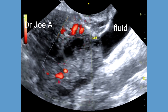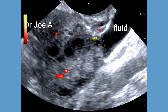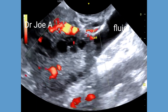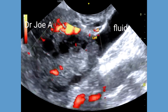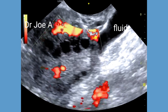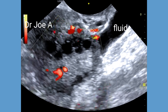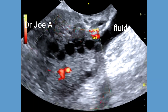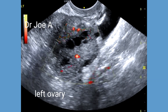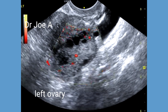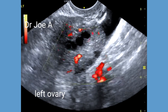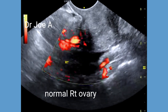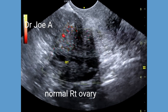Note also the presence of minimal free fluid in the pelvis around the left ovary. Power Doppler shows limited vascularity of the left ovary, suggesting partial or incomplete torsion. The normal right ovary is shown for comparison.